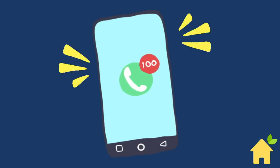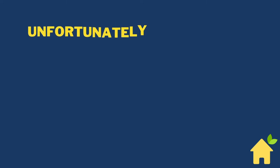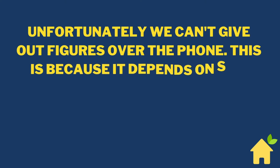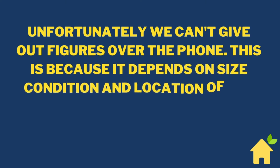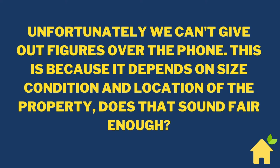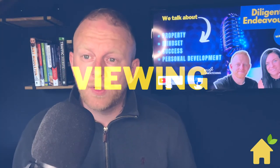I've put together a script for you and you need to follow it word by word. Here it goes: 'Unfortunately we can't give out figures over the phone. This is because it depends on the size, condition and location of the property. Does that sound fair enough?' No one's going to argue with 'does that sound fair enough?' So when they say yeah that sounds fair enough, the next thing that should come out of your mouth is 'Great, when can we book a viewing?' You go through that conversation and get to the viewing, which I've broken down into three parts.